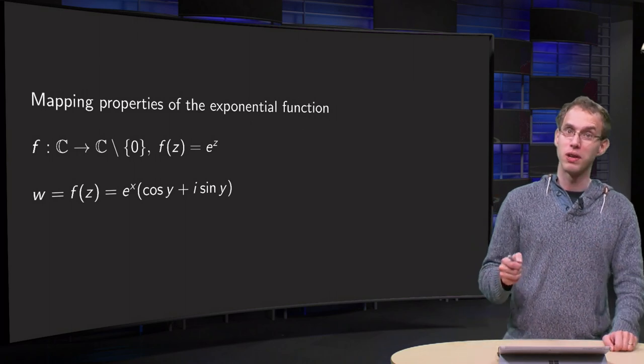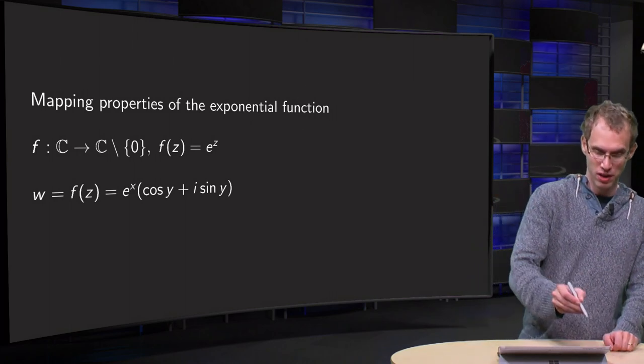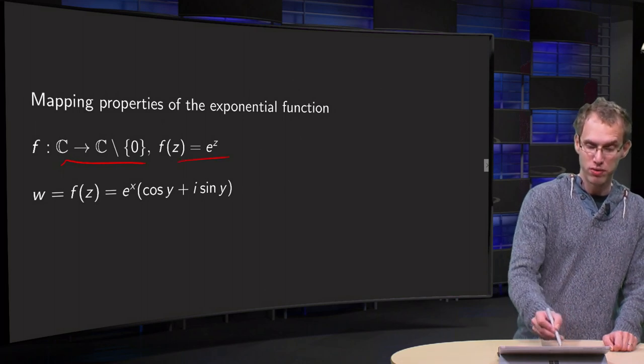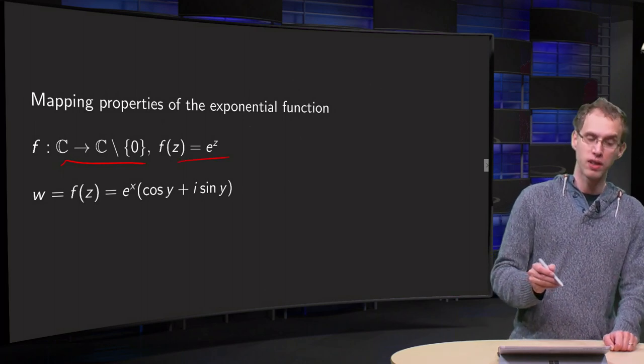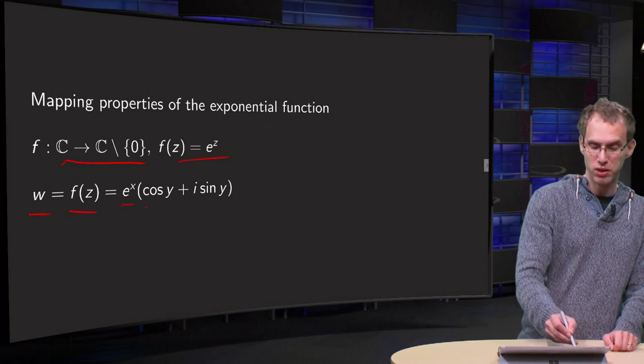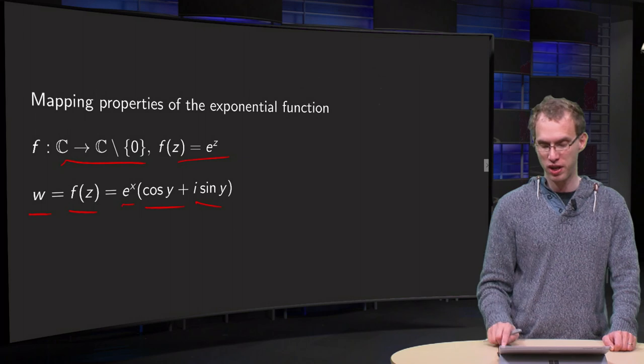So let's take a look at the exponential function first, with f going from C to C without 0, f(z) = e^z, and we can write w = f(z) = e^x(cos y + i sin y).